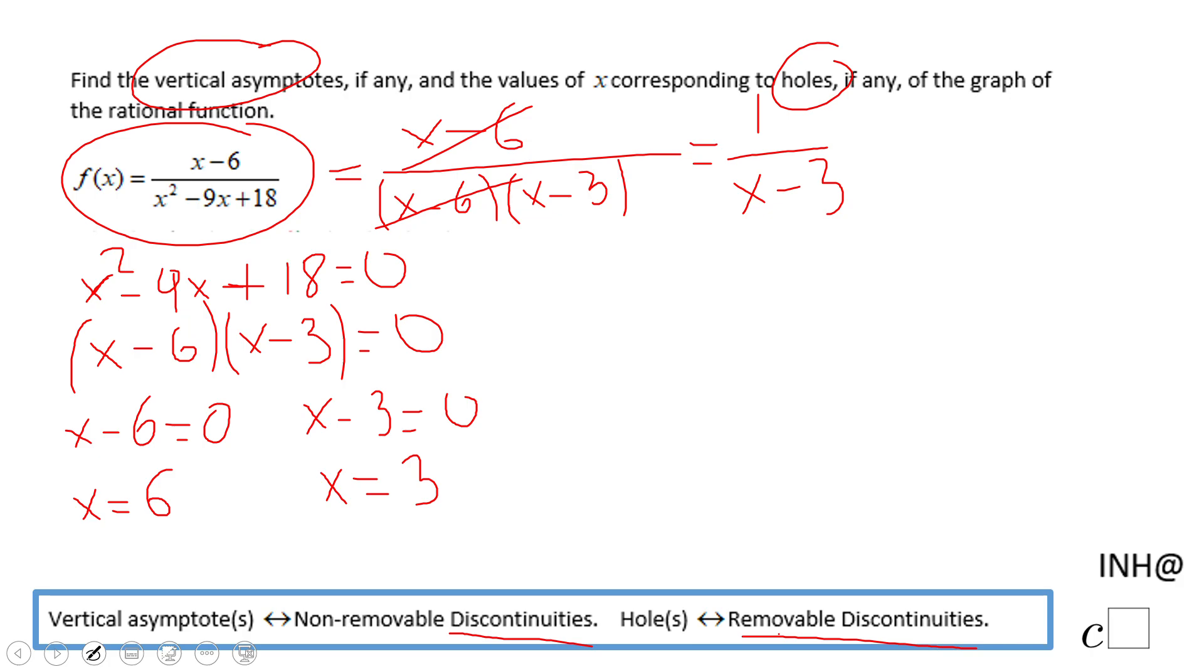It's not the same as 1 over x minus 3, but it's the simplest form. And you notice the x minus 6 was removed.